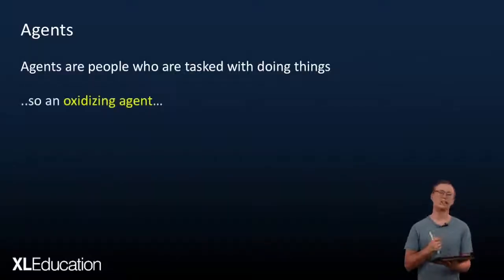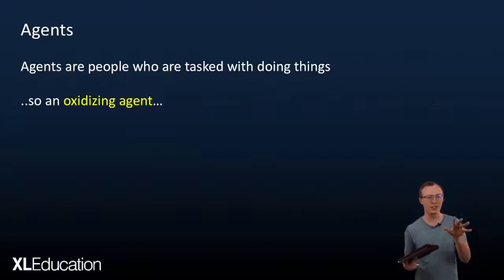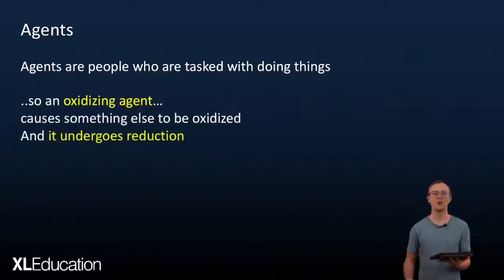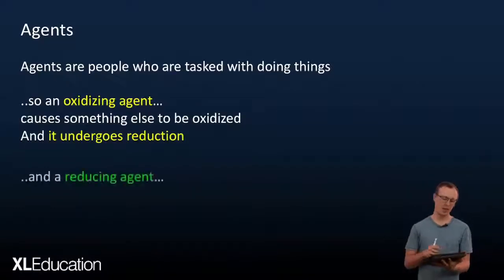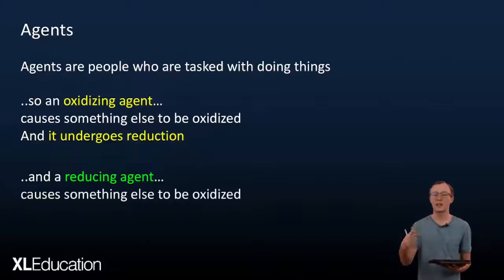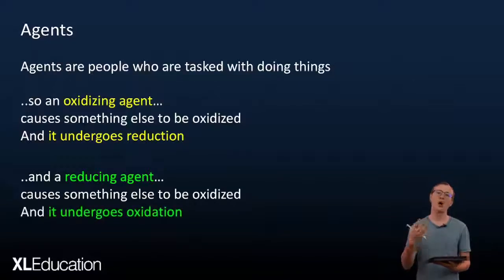Let's look at agents. An agent is somebody who is charged with doing something — they're given a task, they're doers. Oxidizing agents are things that do oxidizing: they go to another substance and cause oxidation to happen, so they themselves undergo reduction. Reducing agents go to other substances and cause reduction to happen, so they themselves undergo oxidation.